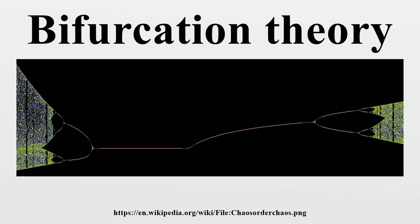Examples of local bifurcations include: saddle node bifurcation, transcritical bifurcation, pitchfork bifurcation, period-doubling bifurcation, Hopf bifurcation, and Neimark-Sacker bifurcation.